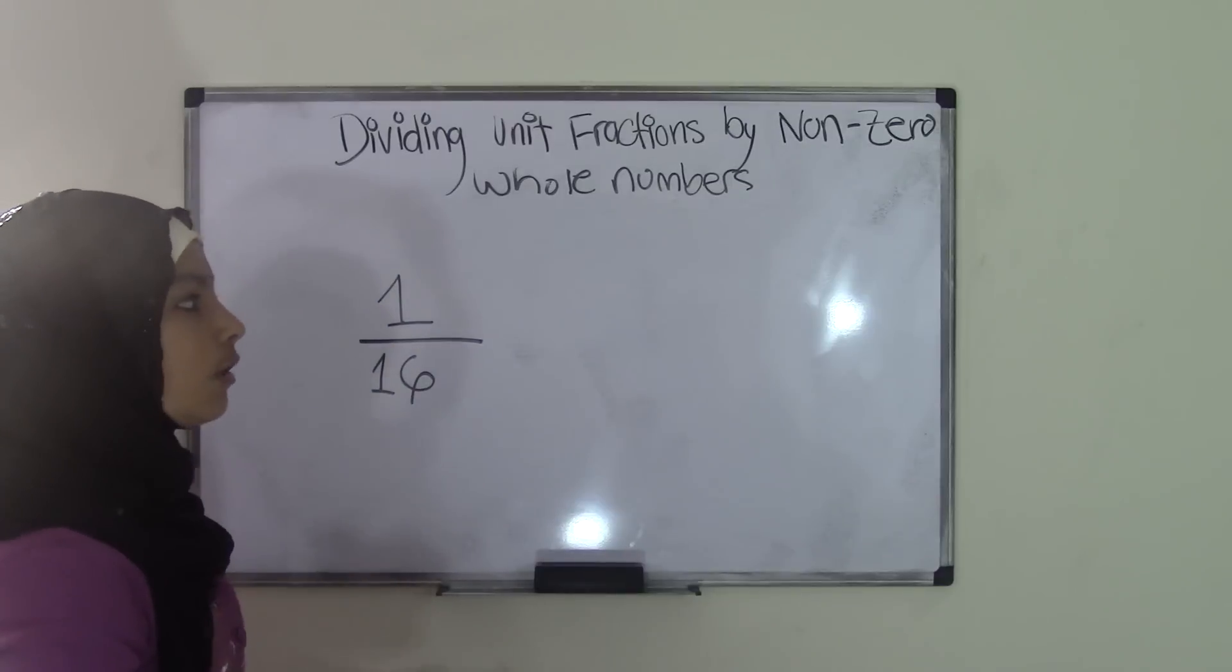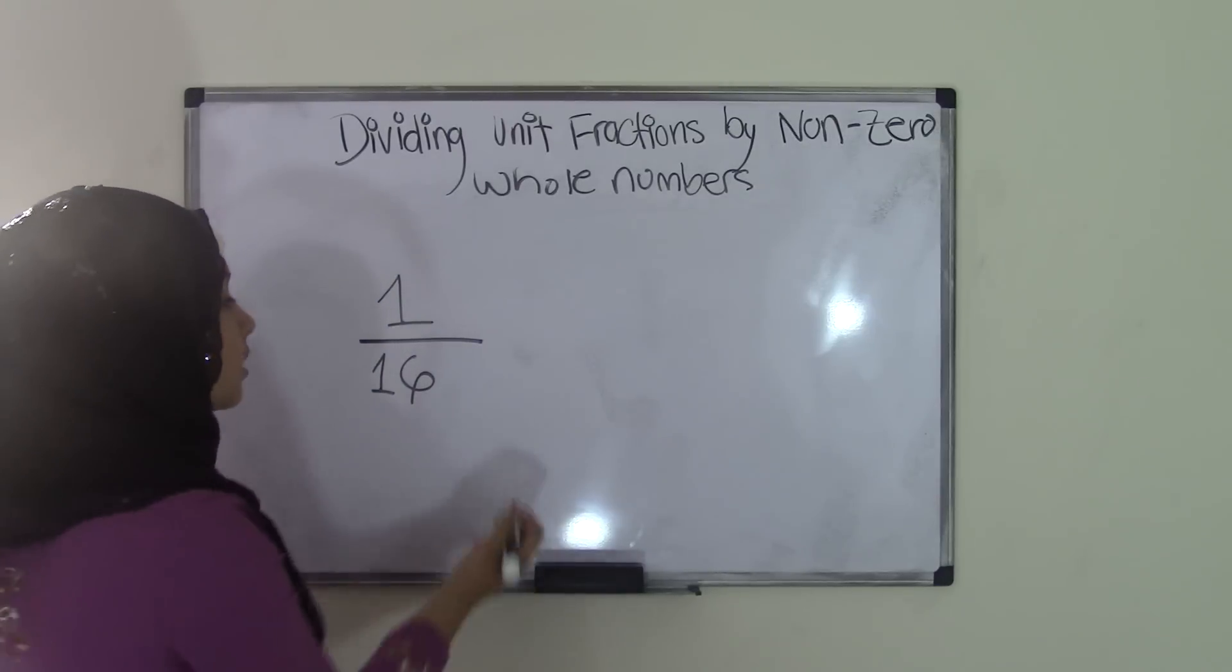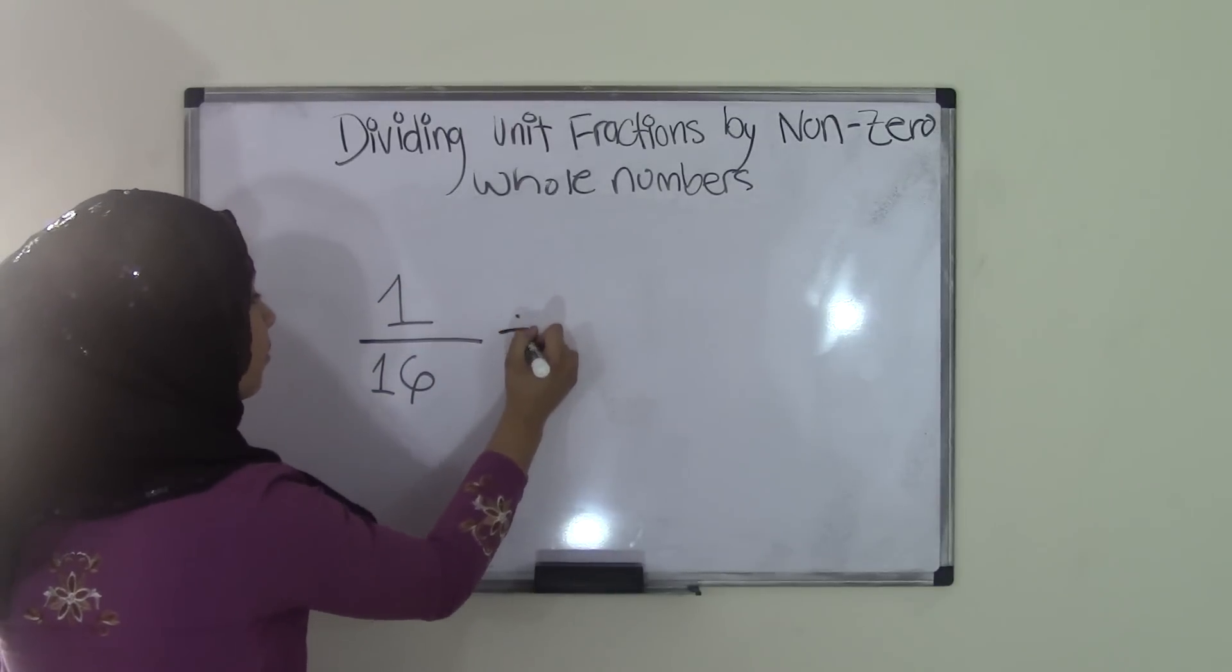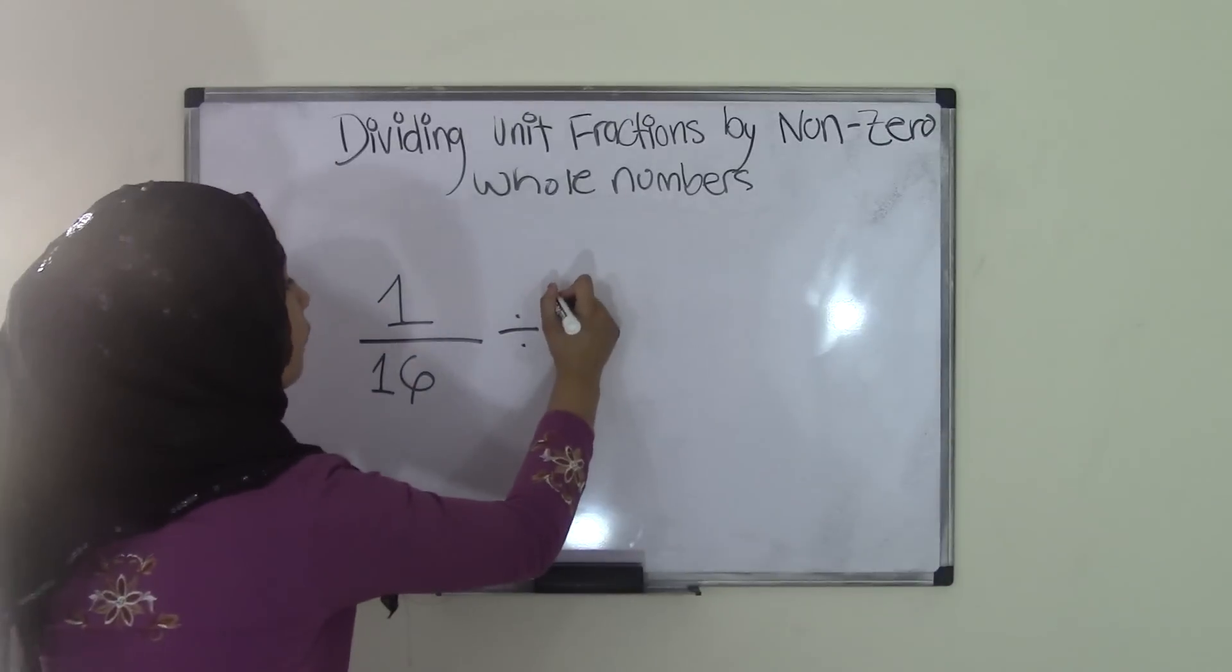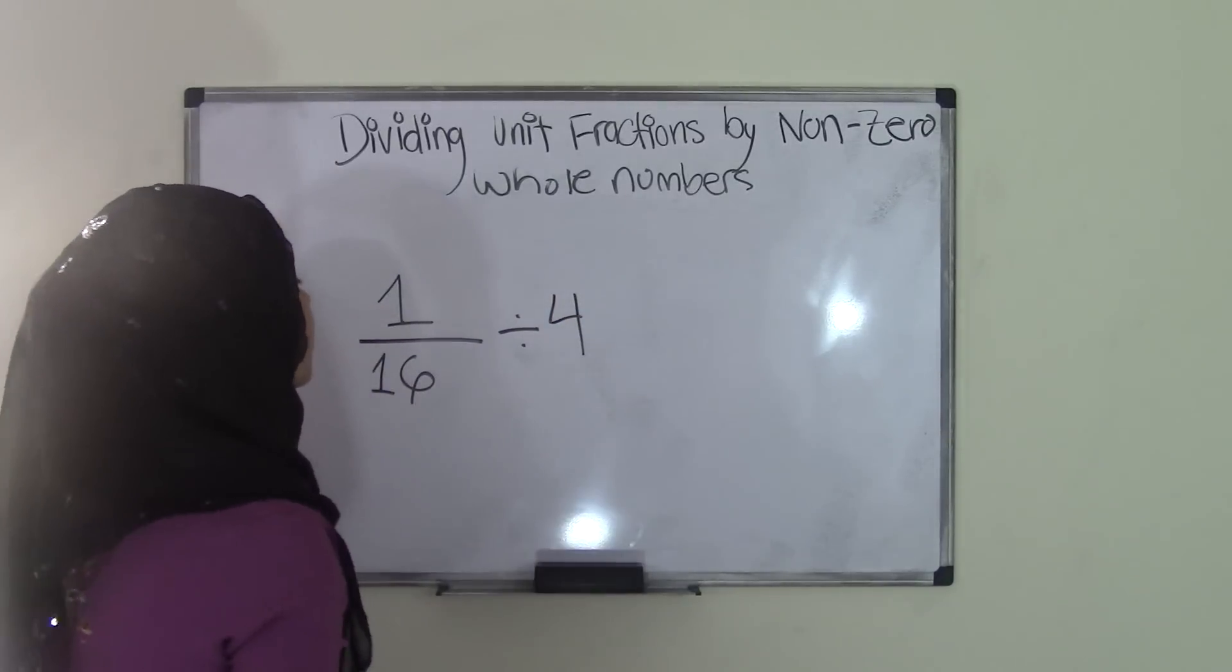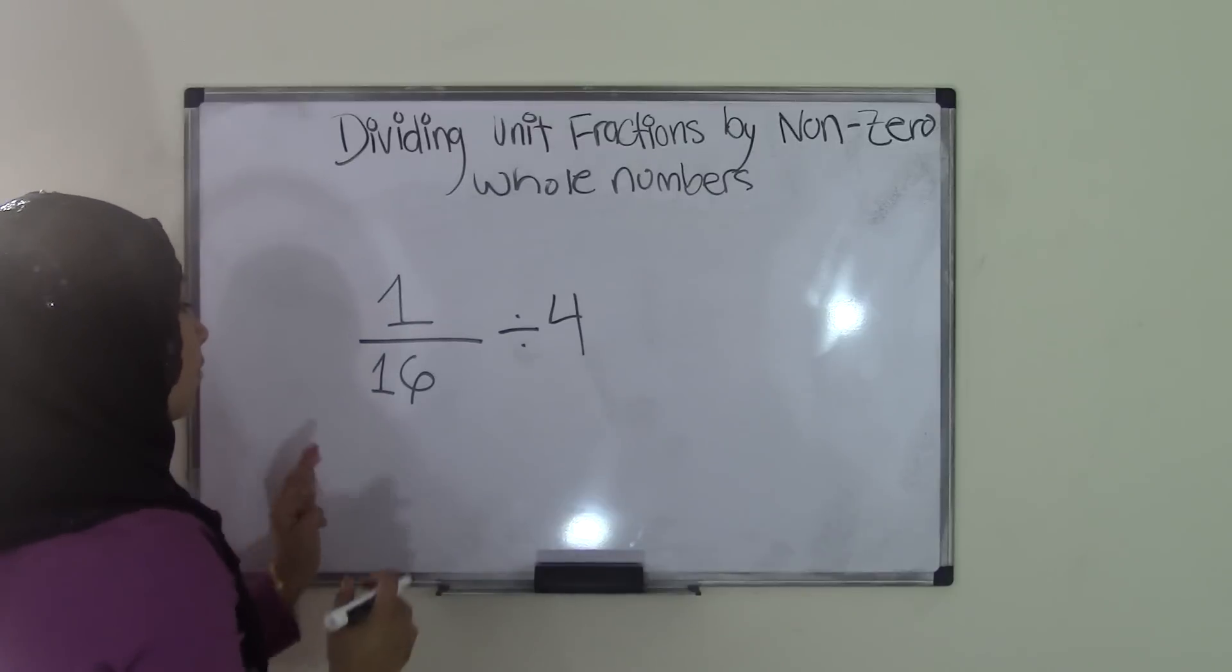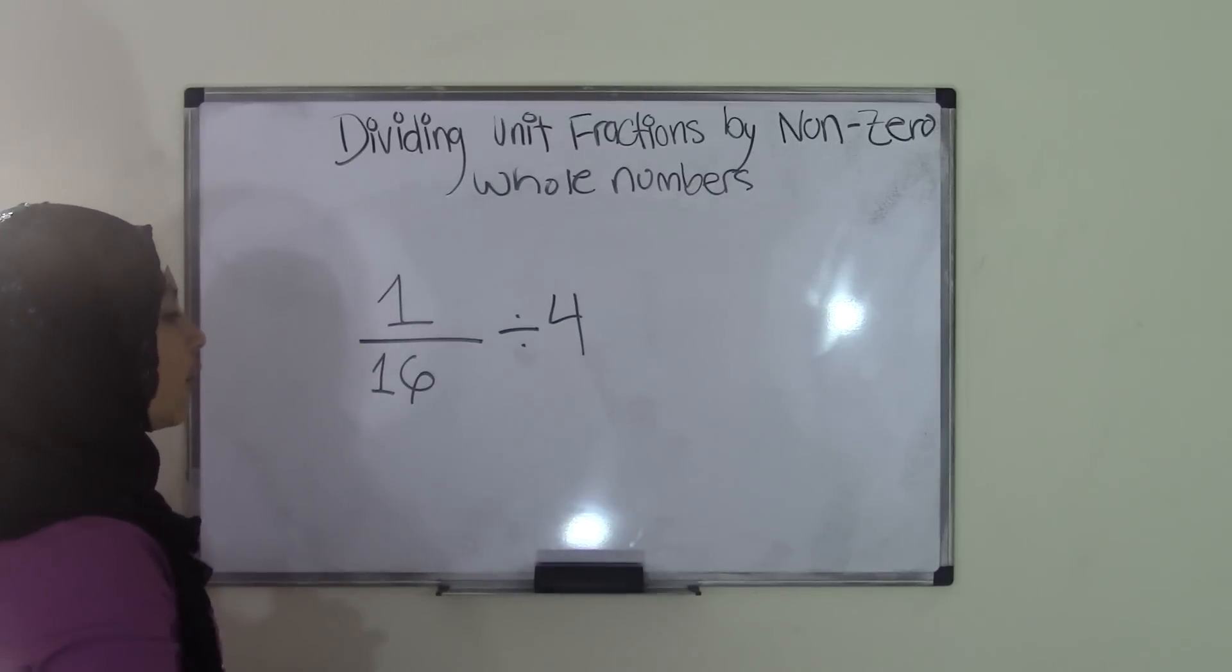And by a non-zero whole number, so your divisor has to be a non-zero whole number. So let's say I'm just going to make it a 4. So now we have 1 over 16 divided by 4. How do you do this?